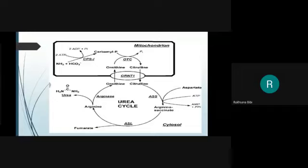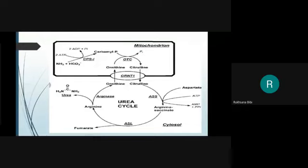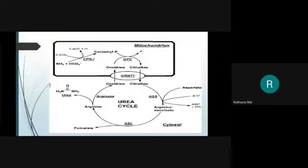The second step: carbamoyl phosphate combines with ornithine to form citrulline. Ornithine from the cytosol enters the mitochondria via the ornithine-citrulline translocase transporter, and citrulline then goes back to the cytosol. The enzyme that catalyzes this step is Ornithine Carbamoyl Transferase (OTC).